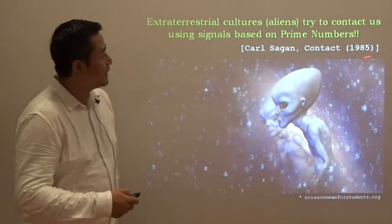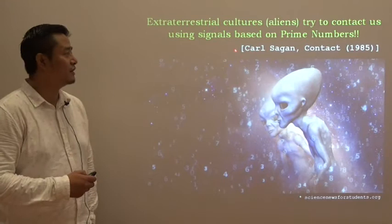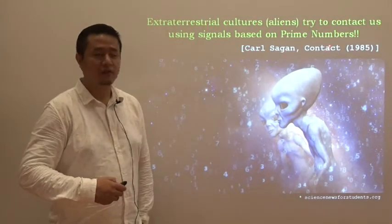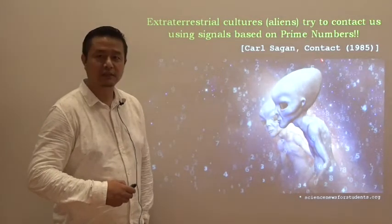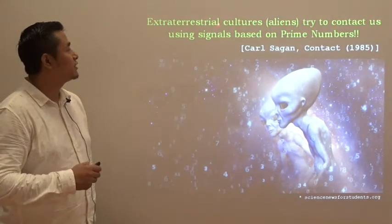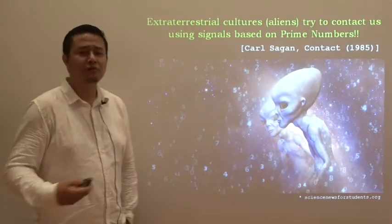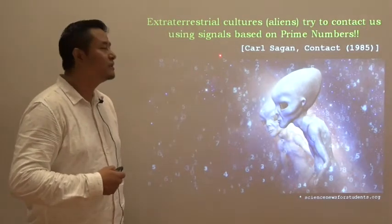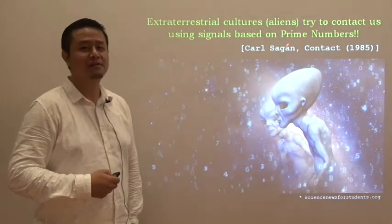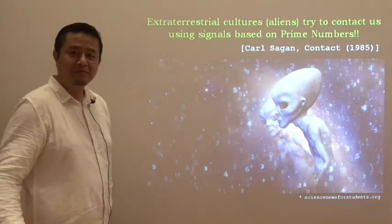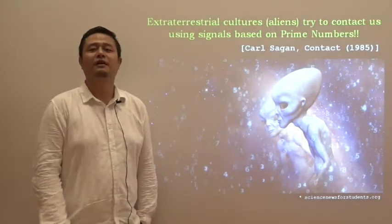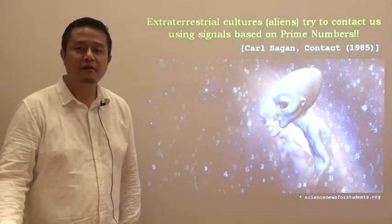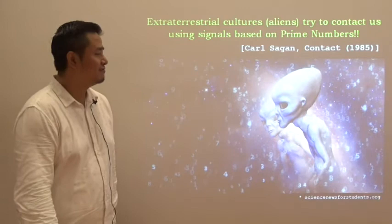In 1985, the great astronomer and writer Carl Sagan wrote in his novel titled Contact that extraterrestrial cultures, or aliens, try to contact us using signals based on prime numbers. Prime numbers become the building blocks of natural numbers and also become a very important means of communication.